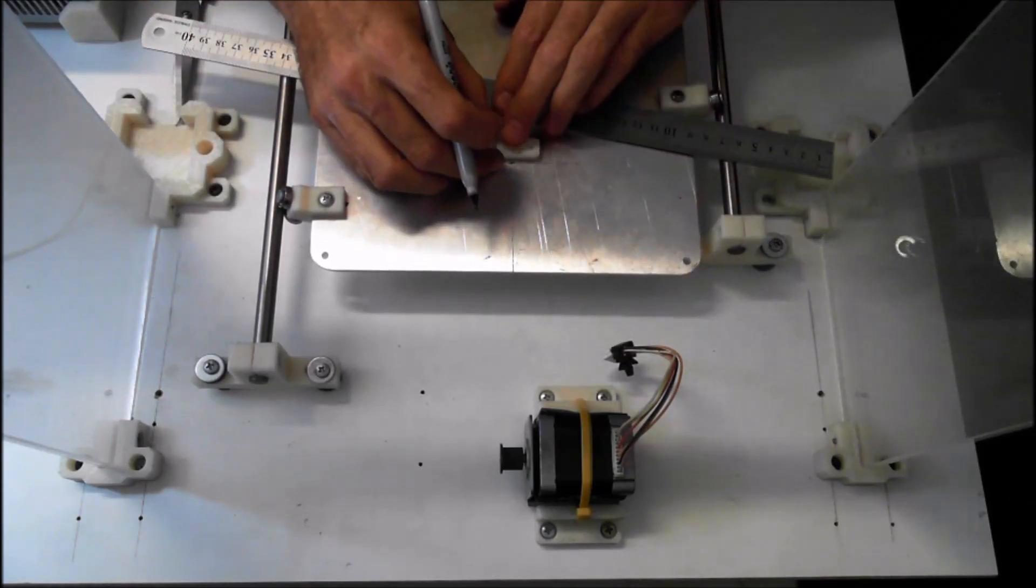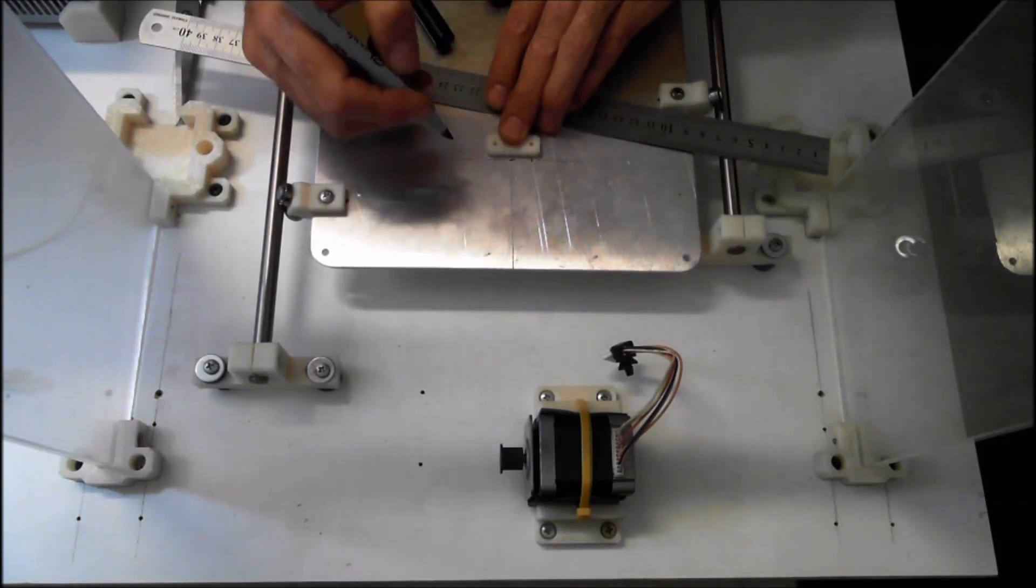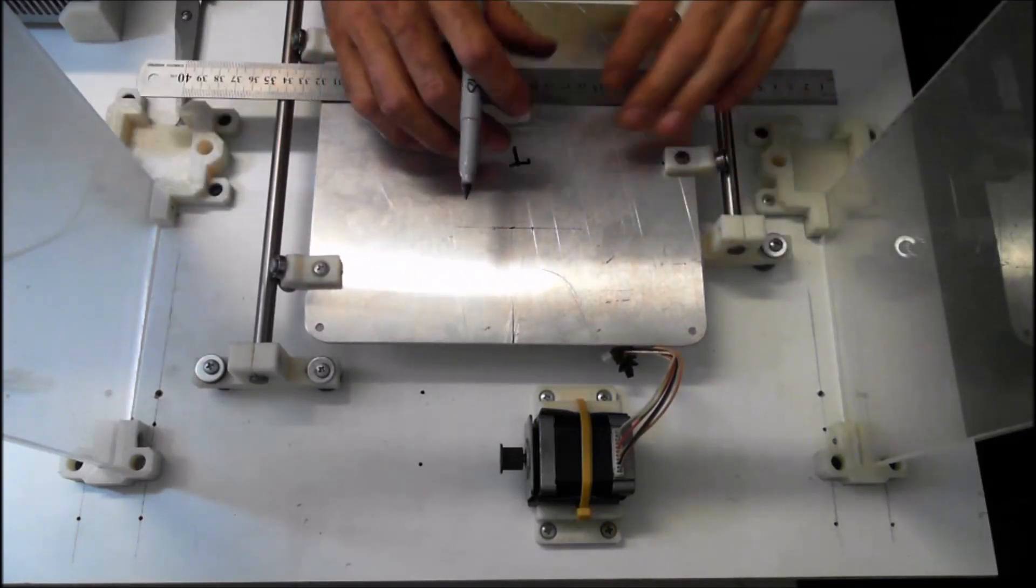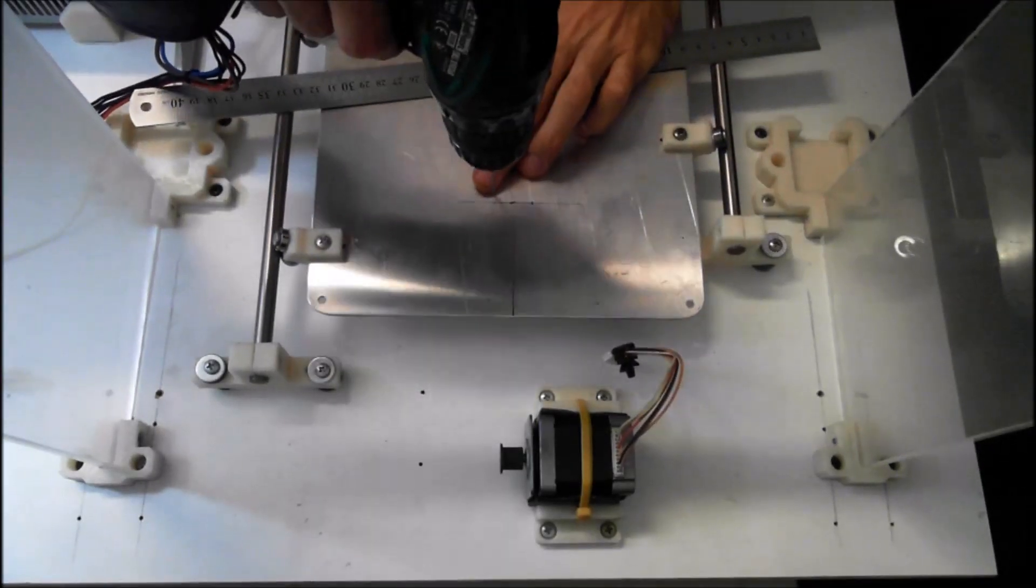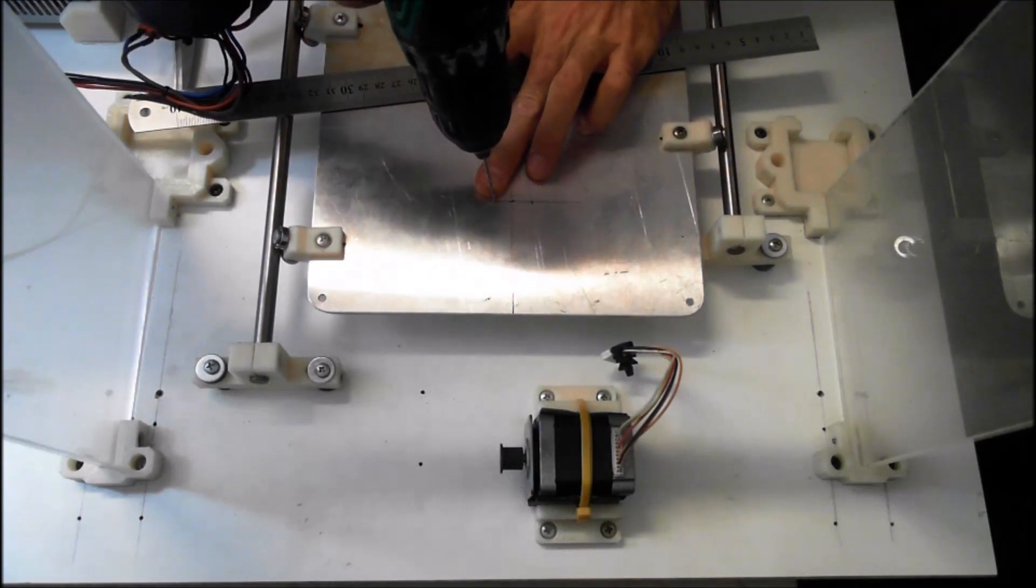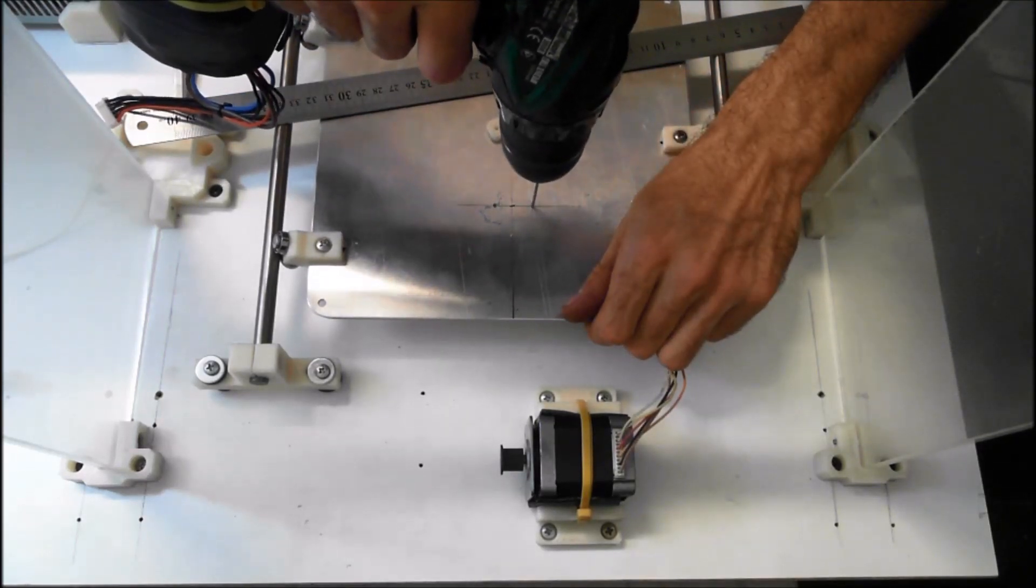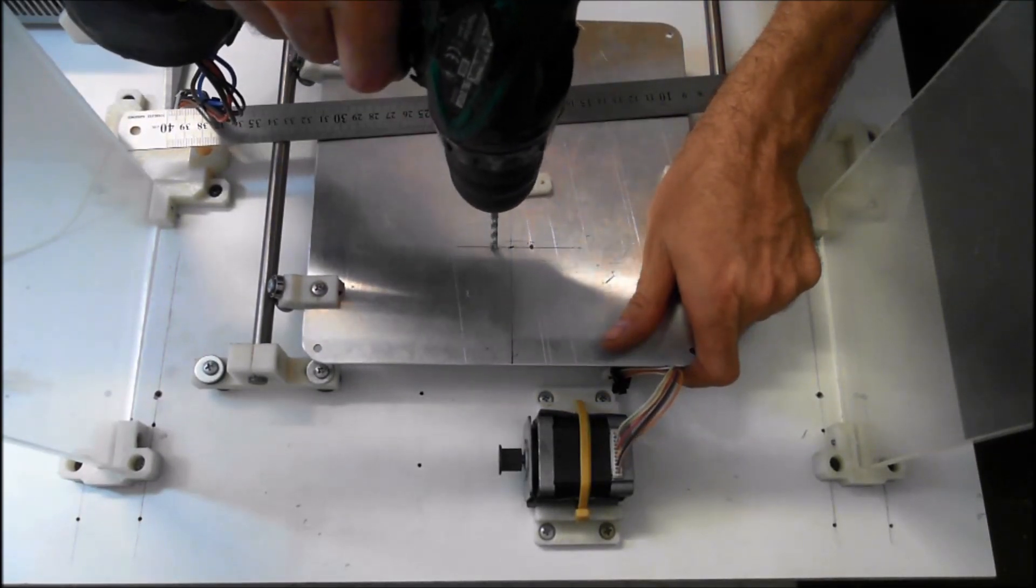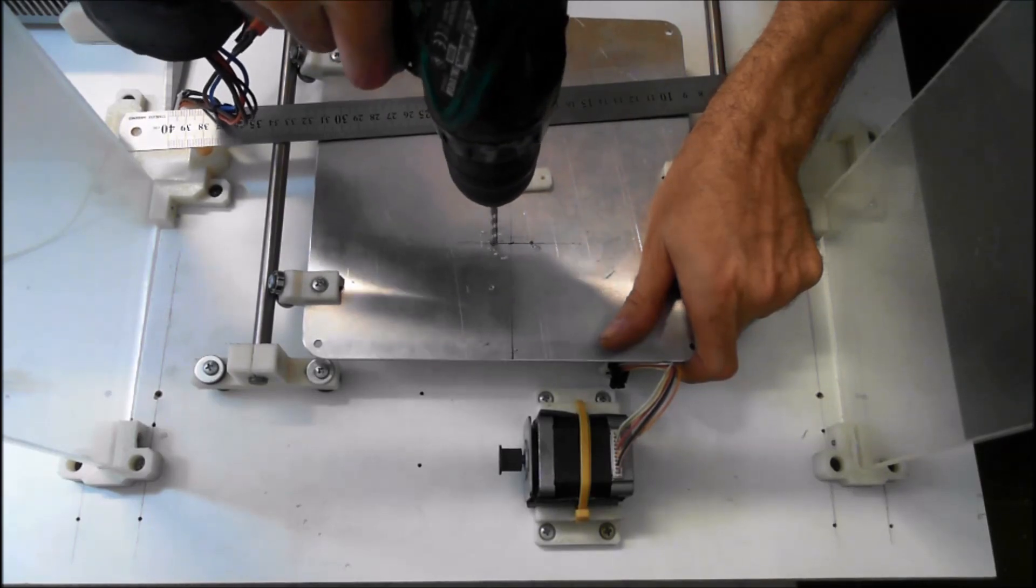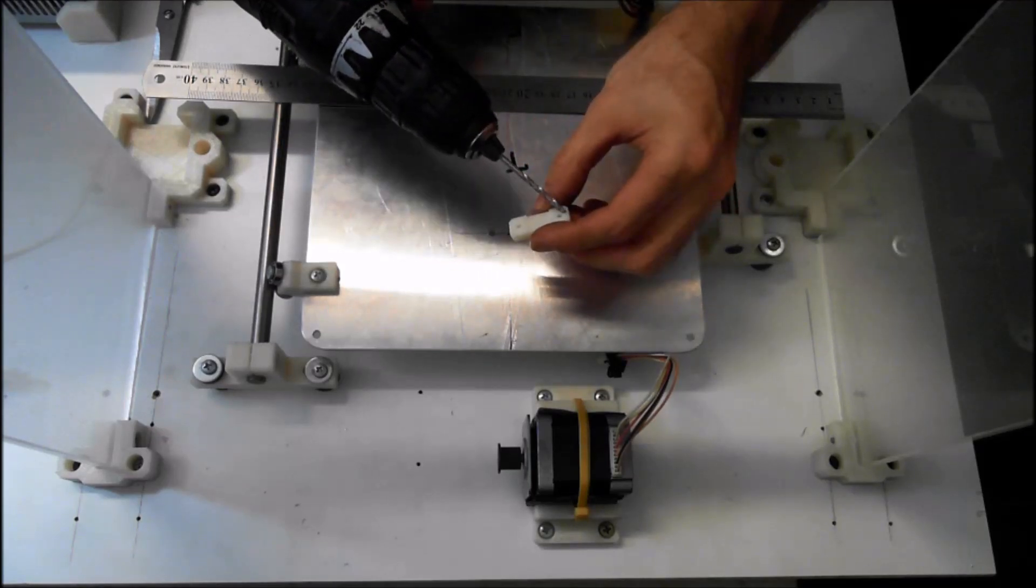I'm just going to mark the holes so we use the bed clamp as a reference. We're going to drill a couple of pilot holes then M2 and then drill them out to 4.2 or 4.5 mm. We'll start with the M2, then use a 4.2 mm drill.